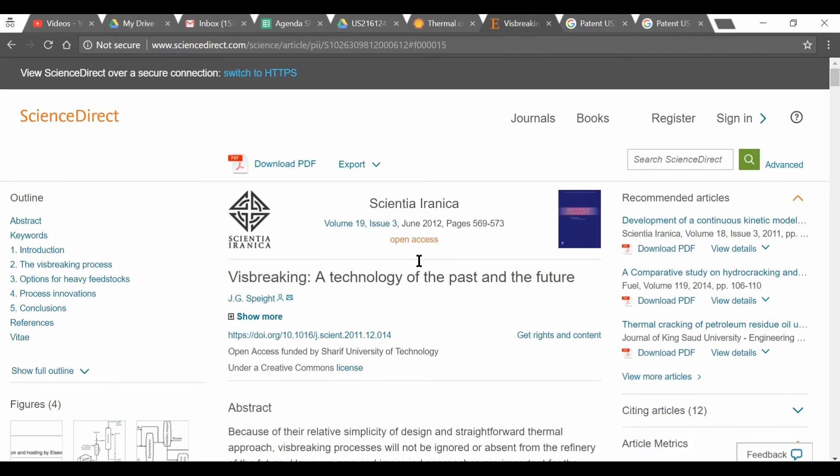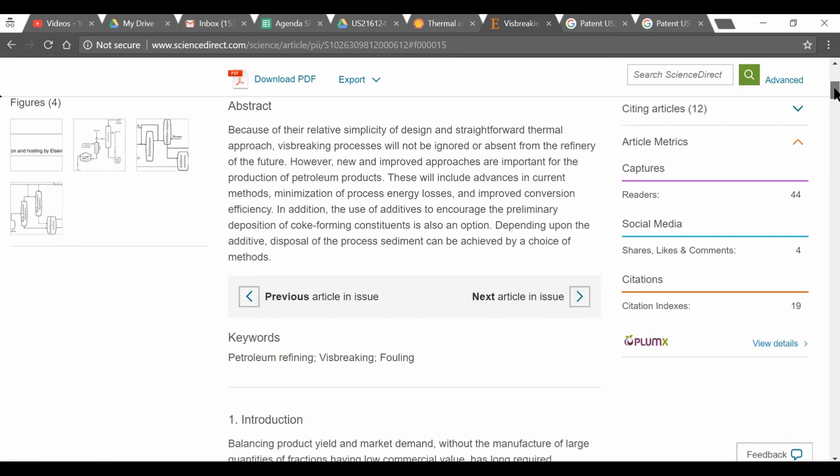One last thing I want to show you before we end this video is take a look at this paper. It's very good for further reading. Again, the link is in the description. It's called Visbreaking: A Technology of the Past and Future. Now most scientific papers, you have to pay a certain amount of money, usually about $35 to download them. But this is thankfully, thanks to Sharif University of Technology, open access and it's under a Creative Commons license, meaning it's free for you to read.